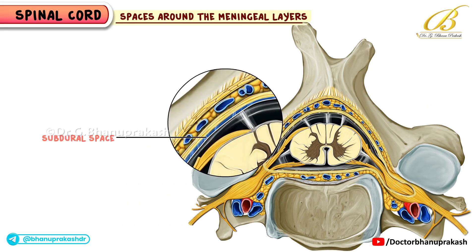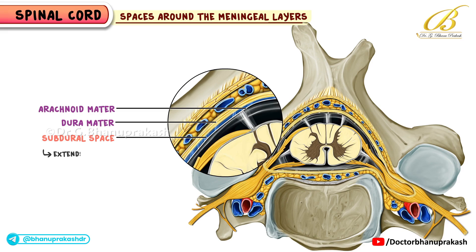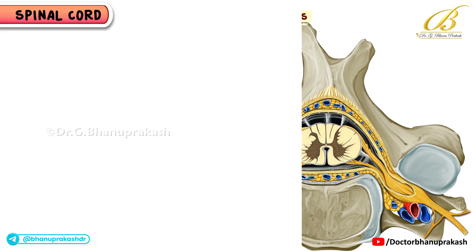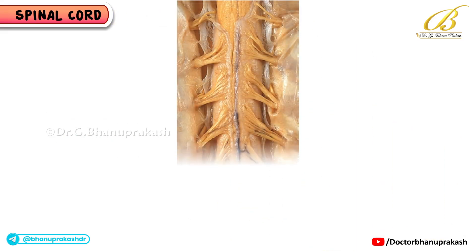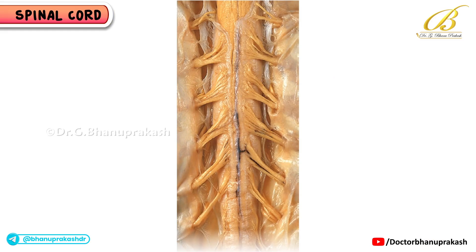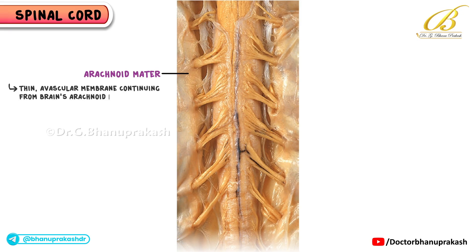Subdural space: this potential space sits between the dura mater and the arachnoid mater, and it extends to the lower border of S2. The arachnoid mater is a thin avascular membrane continuing from the brain's arachnoid layer down to about S2.